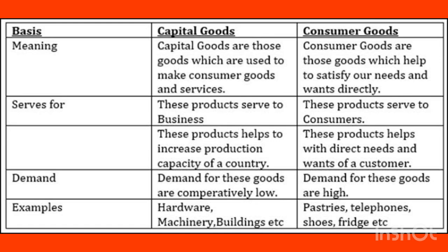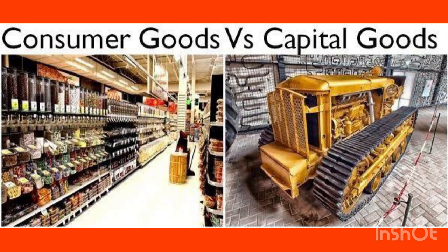Intermediate goods are also called raw materials — they are not used directly by the final user. They go through a production process to become part of a final good. For example, food ingredients used in making a dish are intermediate goods. Consumer goods and capital goods are also important categories.